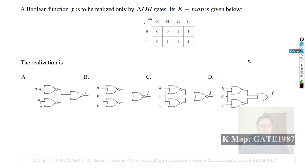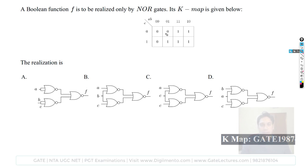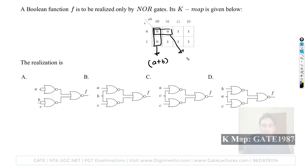The first question: a boolean function F is to be realized only by NOR gates, and the K-map is given. In the four options we have NOR gates. Now, we are not going to look at min terms — we are going to look at max terms. This is a max term, and this is also a max term.